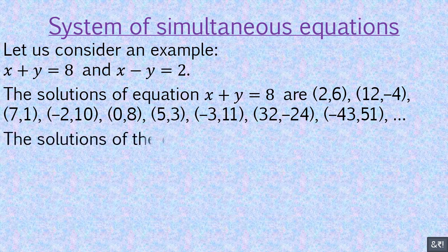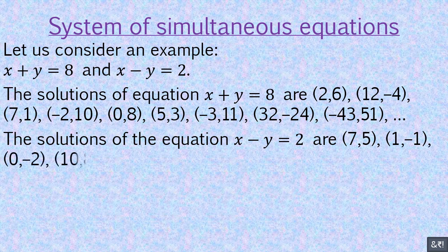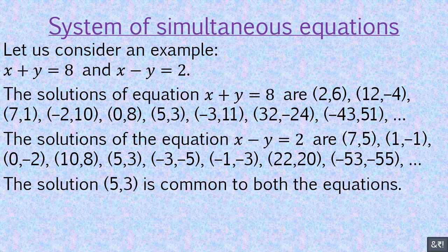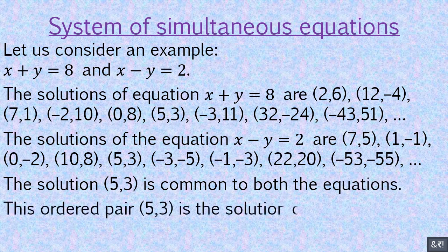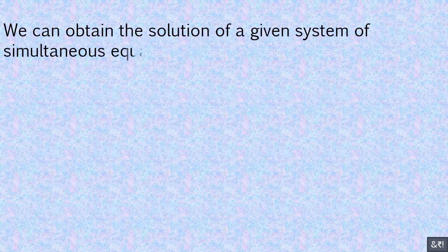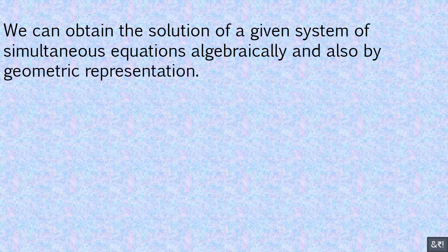The solutions of equation x minus y equals 2 include ordered pairs such as (7, 5), (1, -1), (0, -2), (10, 8), (5, 5), (3, -3), (-1, -3), (22, 20), (-53, -55), and so on. The solution (5, 3) is common to both equations. This ordered pair (5, 3) is the solution of the given system of simultaneous equations. We can obtain the solution of a given system of simultaneous equations algebraically and also by geometric representation.